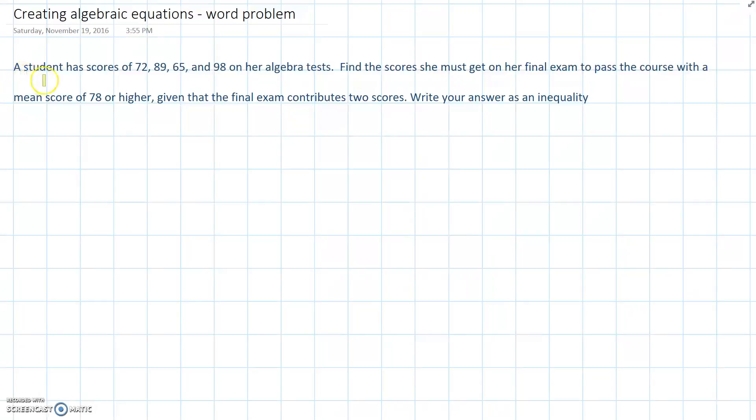So, a student has scores of 72, 89, 65 and 98 on her algebra tests. Find the scores she must get on her final exam to pass the course with a mean score of 78 or higher, given that the final exam contributes two scores. Write your answer as an inequality.